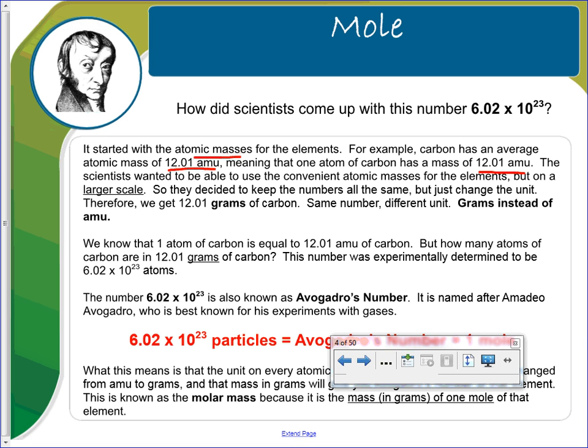The scientists wanted to be able to use the convenient atomic masses for the elements, but on a larger scale. So they decided to keep the numbers all the same, just change the unit. And so we used 12.01 grams of carbon. It's the same number, just a different unit, so we're going to use grams instead of amu.